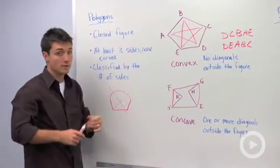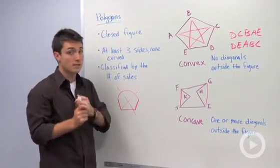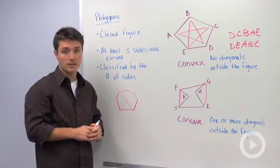The key things about polygons: closed figure, three sides, none of which are curved, and you classify it by how many sides it has.